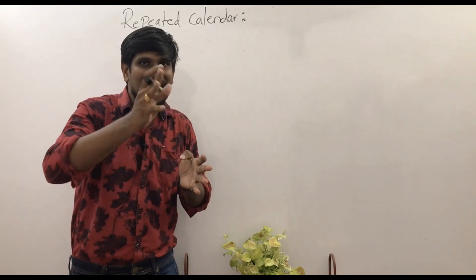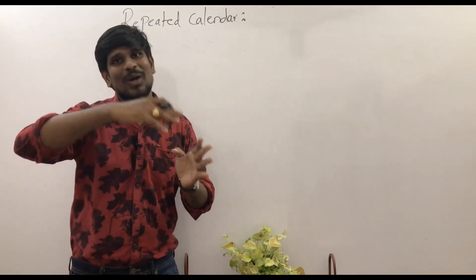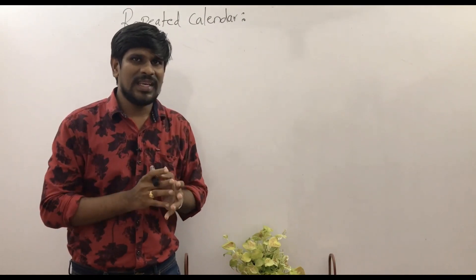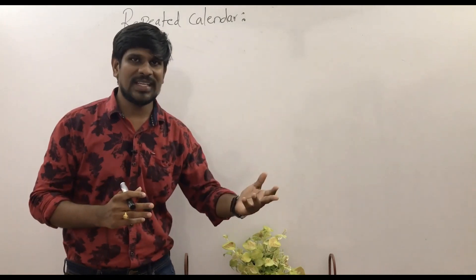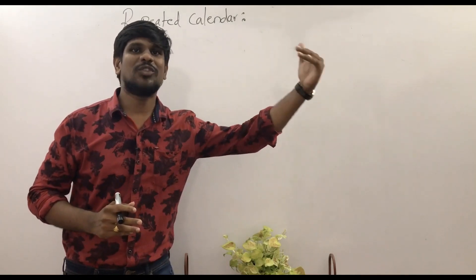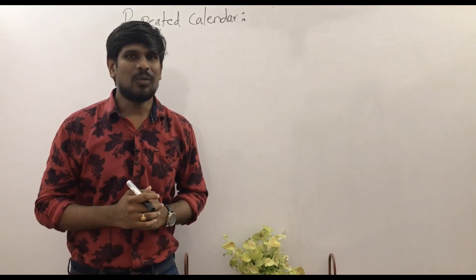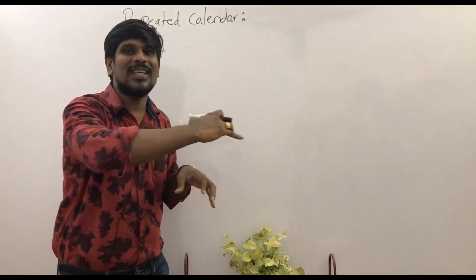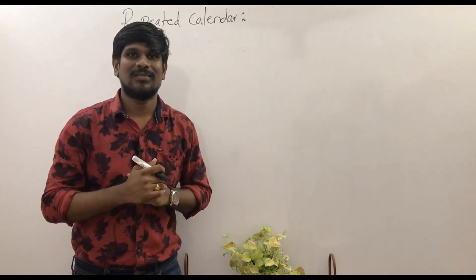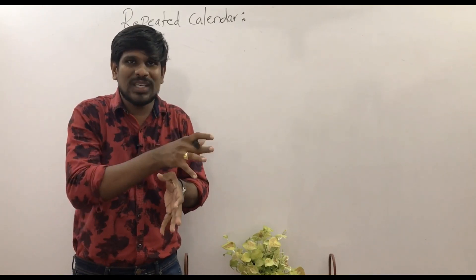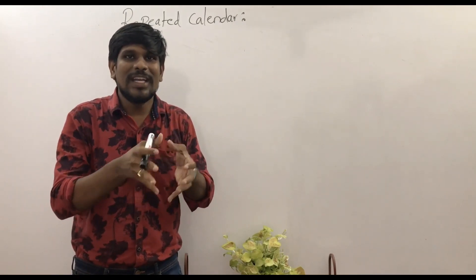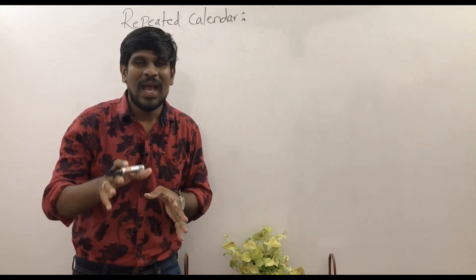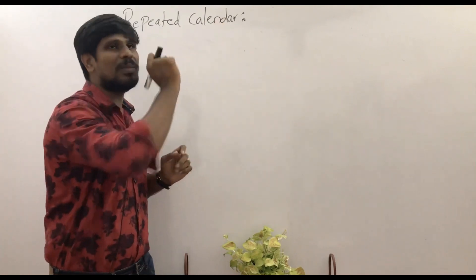When counting days - 7 days, 14 days, 21 days, 28 days - what does it mean? Now on Friday, if there are 0 number of odd days, it means the same day repeats. That's our basic knowledge. If you know, this concept is applied to the same concept.